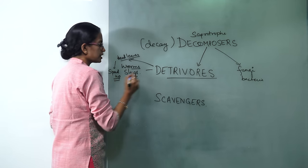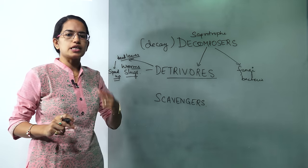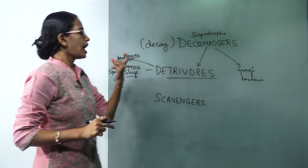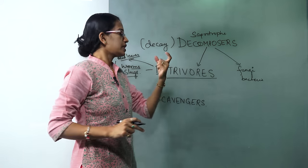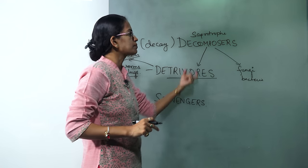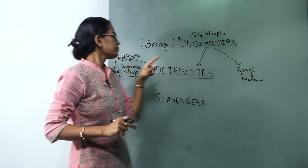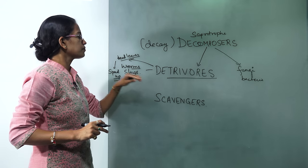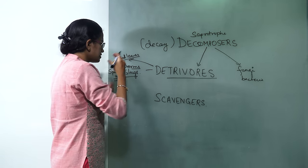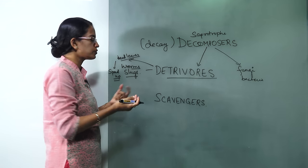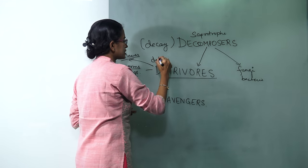So there are two functions that detrivores have. They break it further and speed up the process, and very important thing, detrivores are a subtype of decomposer. The material that they break down into is known as detritus.